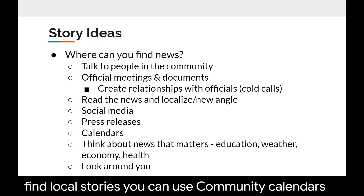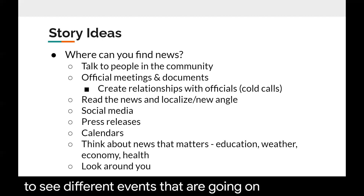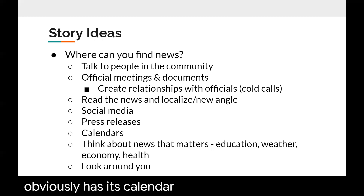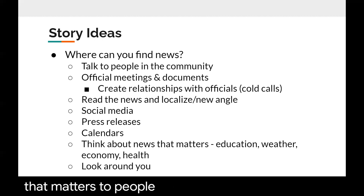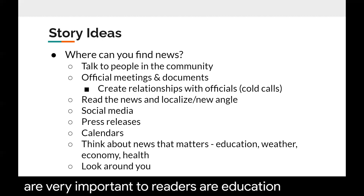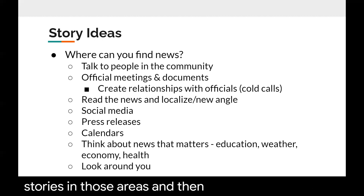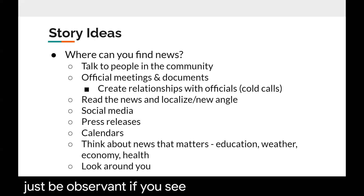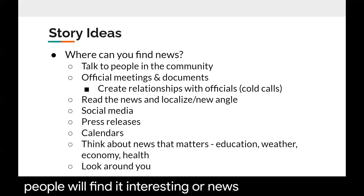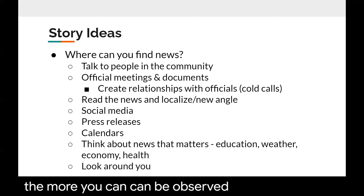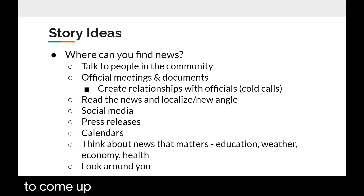You can use community calendars to see different events going on. Montevallo obviously has its calendar, which is a great place to look for events happening around campus. Also think about news that matters to people — some of the main topics very important to readers are education, weather, economy, and health. Find larger national stories in those areas and localize them so they matter to people in your community. Finally, just be observant. If you see something you think is interesting or newsworthy, it's likely that other people will find it interesting as well.